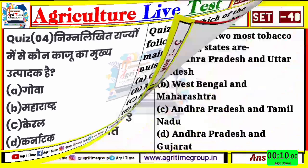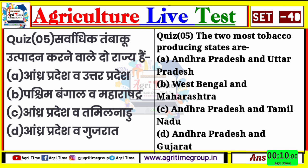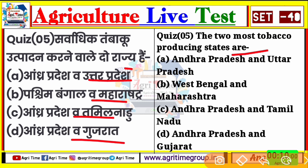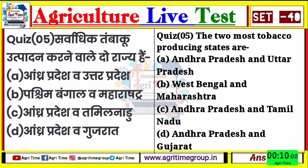ये रहा आपके screen पर - सर्वाधिक तम्बाखू उत्पादन करने वाले दो राज्य कौन से हैं? The two most tobacco producing states are. Options दिये हैं: आंध्रप्रदेश व उत्तरप्रदेश, पश्चिम बंगाल व महाराष्ट्र, आंध्रप्रदेश व तमिलनाडु, आंध्रप्रदेश व गुजरात। तम्बाखू से related questions में अक्सर पूछा जाता है कि ज्यादा उत्पादन करने वाले राज्य कौन हैं। Comment कीजिए, quiz 5 का right answer क्या होगा?